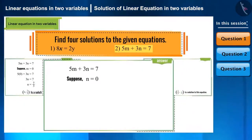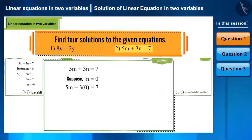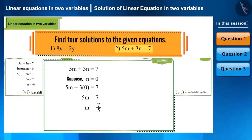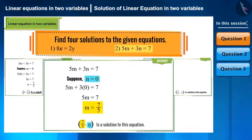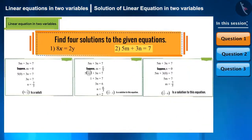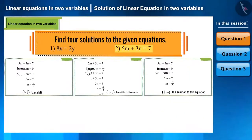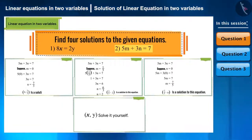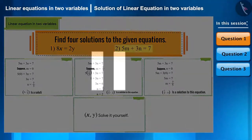Now, let's take the value of n as 0 and find the value of m by substituting it in the equation. Here, we get the value of m as 7 by 5. Hence, (7/5, 0) is another solution of this equation. Now we need another solution — find it yourself. You can also pause the video to find it.